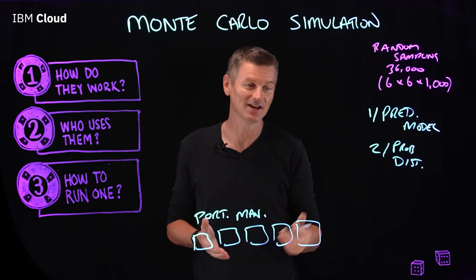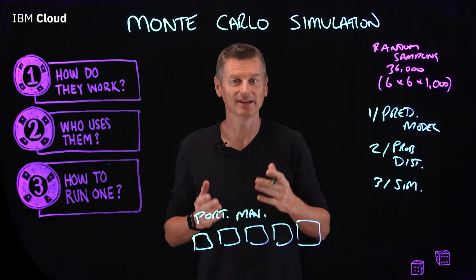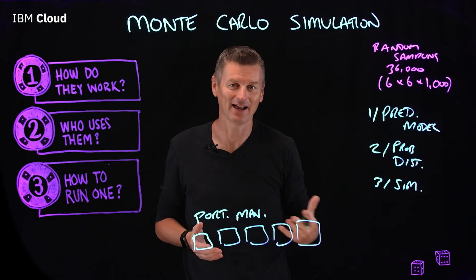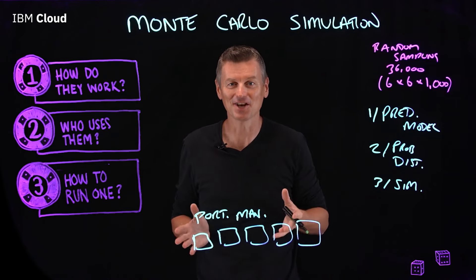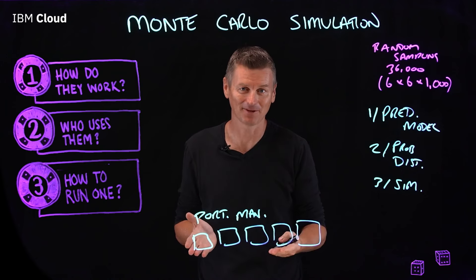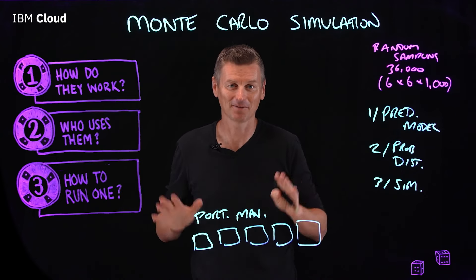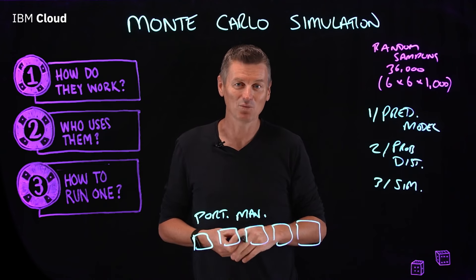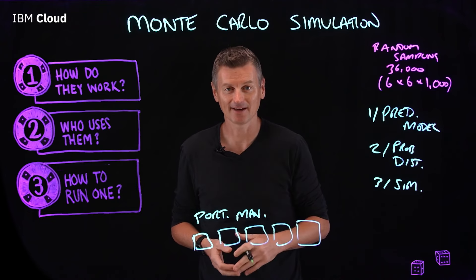Number three: run simulations repeatedly, generating random values of the independent variables. Do this until enough results are gathered to make up a representative sample of the near-infinite number of possible combinations. You can run as many Monte Carlo simulations as you wish by modifying the underlying parameters you use to simulate the data.